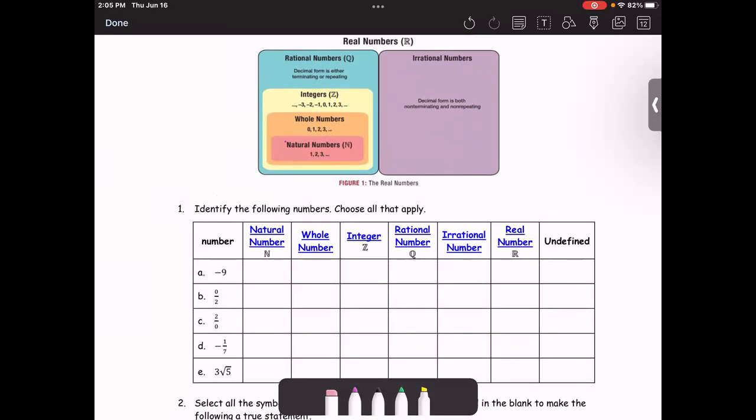For the first example, we are going to identify the following numbers and choose all that apply. These numbers could be natural number, whole number, integer, rational number, irrational number, real number, or undefined, or maybe two or more.